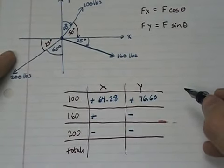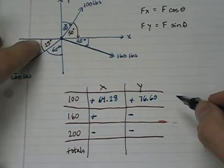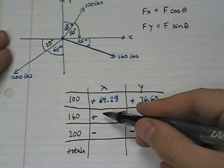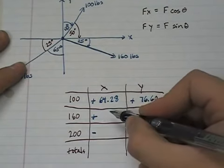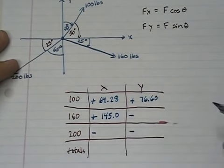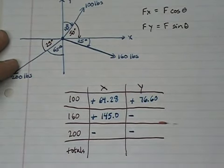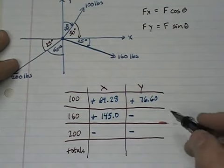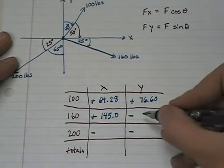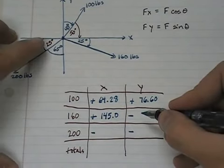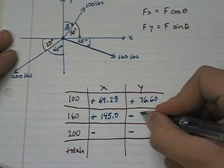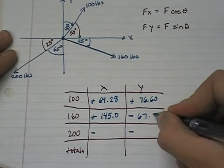Now on to 160. Its angle was 25 degrees. So this is going to be 160 times the cosine of 25. And that gives me 145.0, giving every answer to four significant figures. And for the y component it's going to be 160 times the sine of 25 degrees. 160 sine of 25 gives me negative 67.62.